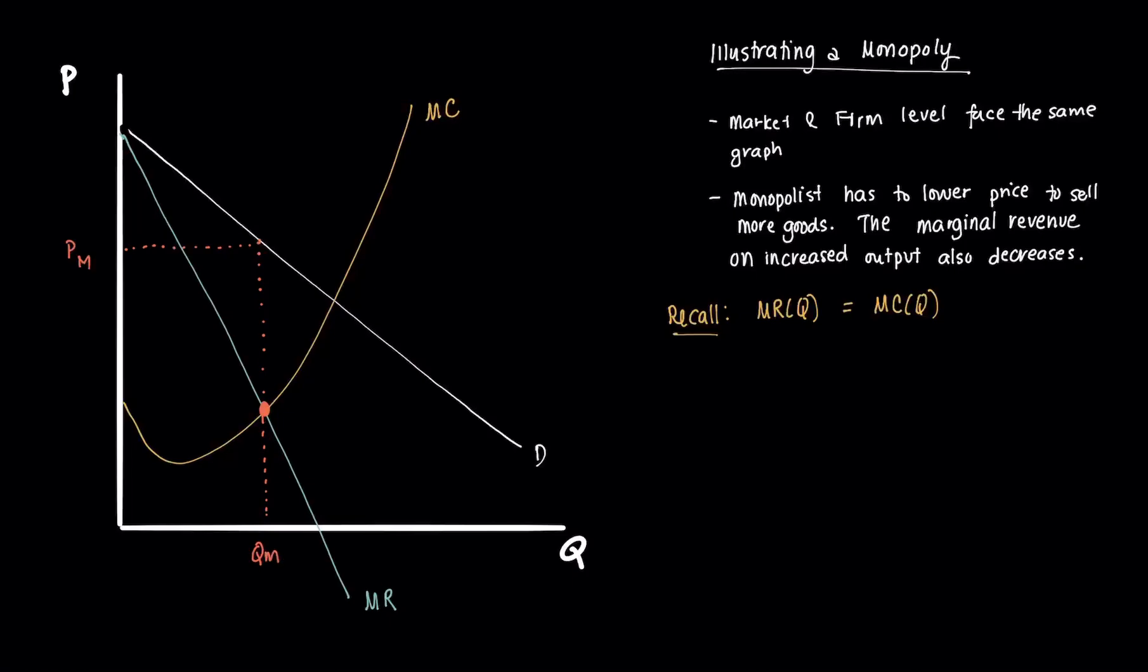Now we want to know whether or not the monopolist is profitable. In order to do that, we need to analyze its average total cost curve. Suppose we have an average total cost curve here, ATC. And we find that it intersects that line there at that point, and we have here our average total cost.